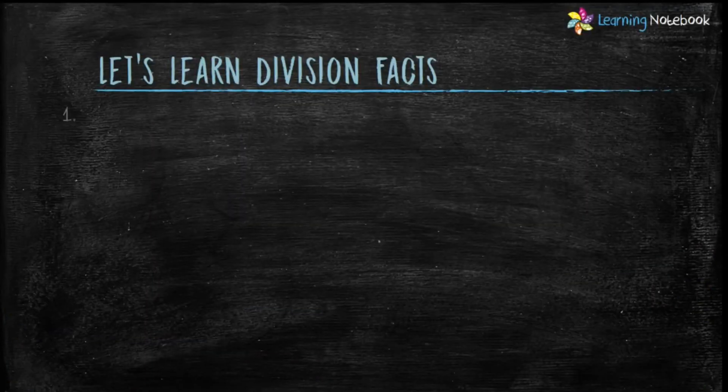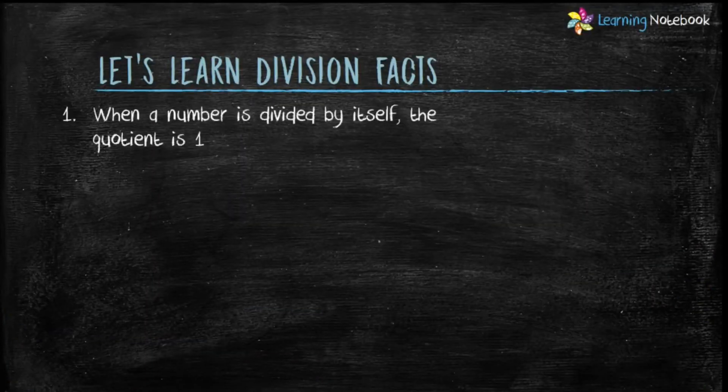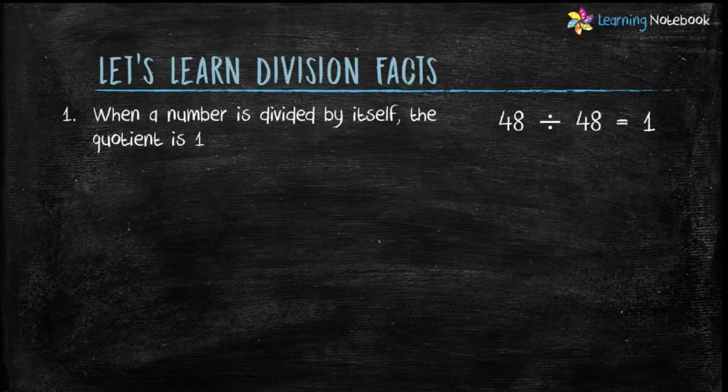First fact is, when a number is divided by itself, the quotient is 1. Let's take number 48. Divide 48 by 48 and the quotient comes out to be 1.